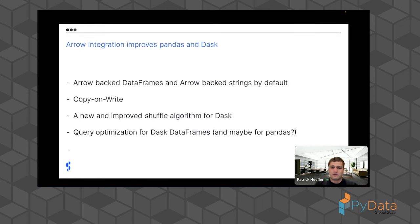We'll talk about a bunch of different things. Pandas started moving more towards Apache Arrow for certain parts of the API a couple of years ago, resulting in features that are very helpful for usability, performance, and memory consumption. Users can now create Arrow-backed dataframes, meaning the dataframe is completely backed by Apache Arrow instead of NumPy.